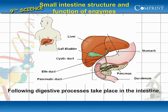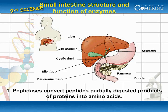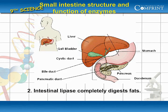The following digestive processes take place in the intestine. Peptidases convert peptides — the partially digested products of proteins — into amino acids. Intestinal lipase completely digests fats.